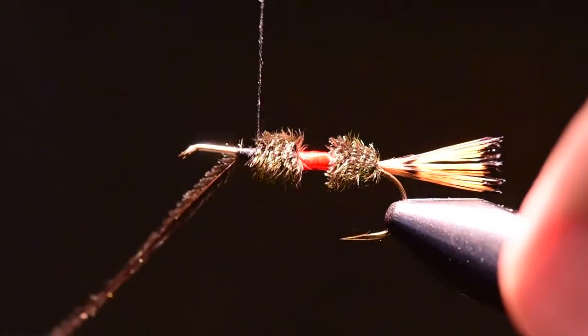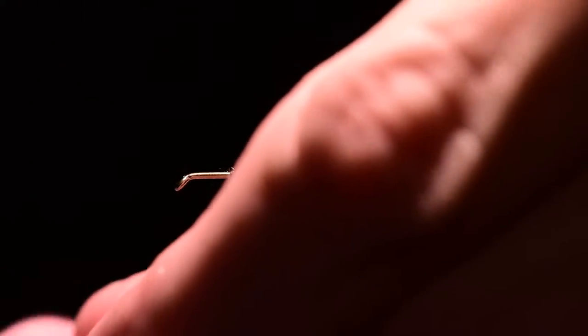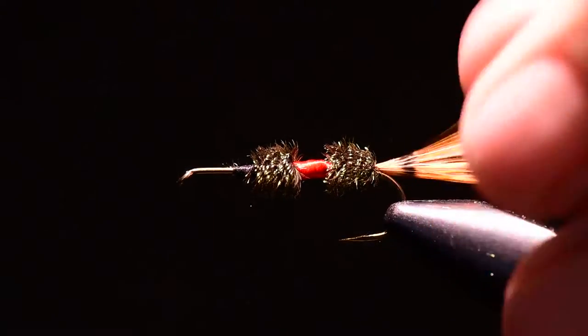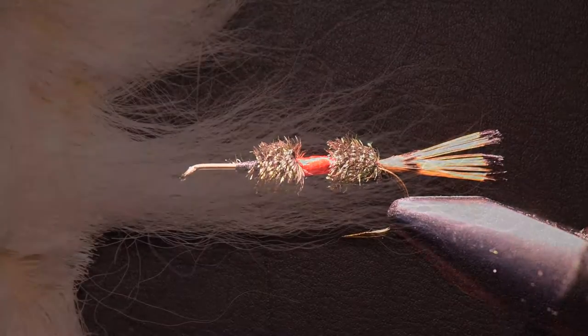This should leave me right at the two-thirds point of the hook which is where I'm going to place the wing. Next I'm going to take my calf tail or calf body hair and I'll clip off a group of hair that's about the circumference of a pencil. I'm going to clean that hair and then I'll try and align the tips as best I can and put it in a stacker and stack it as best I can.